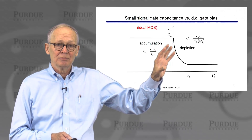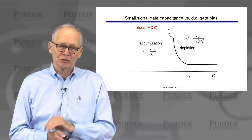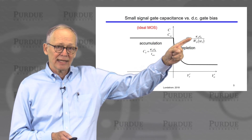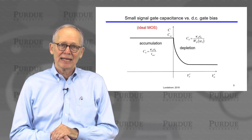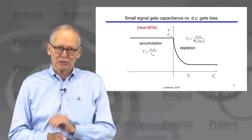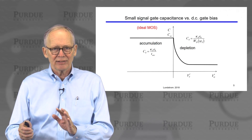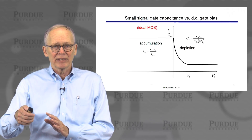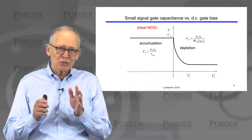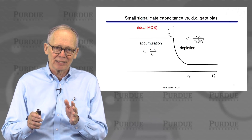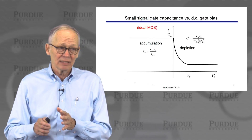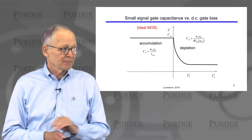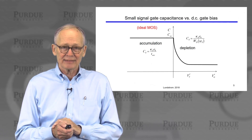As we move the DC bias to bend the bands down and deplete, we now have a semiconductor capacitance. The semiconductor capacitance is the dielectric constant of the semiconductor divided by the depth of the depletion region. The depletion region, depleted of carriers, acts as an insulator, while the doped p-type layer below it acts like a metallic plate. Now we have two different insulators between two metallic plates — two capacitors in series — and the overall capacitance drops as we deplete the semiconductor.